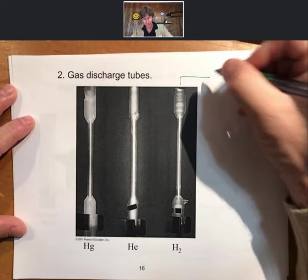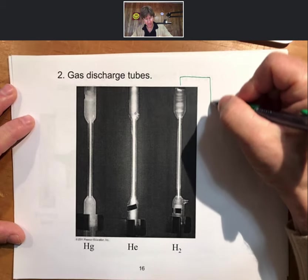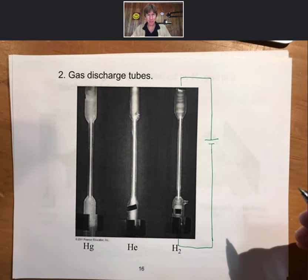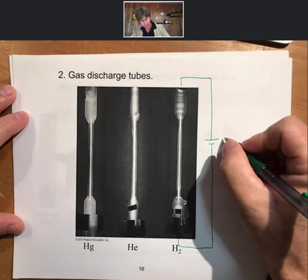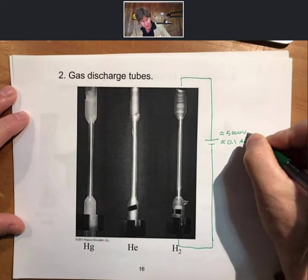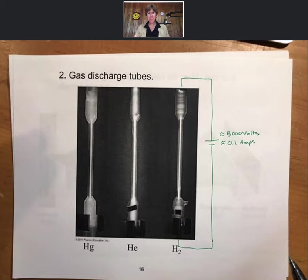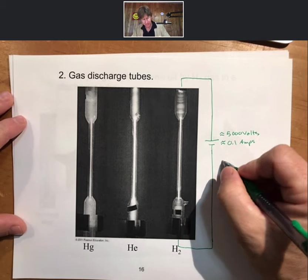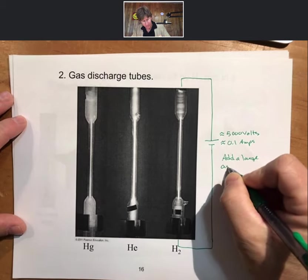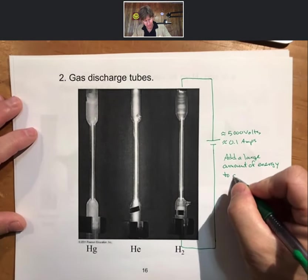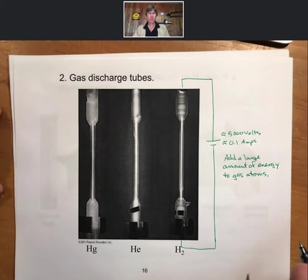Let me sketch this process. This gas discharge tube is in a setup showing some sort of power supply — it does plug in. When you do this, you're applying approximately 5,000 volts and approximately 0.1 amps. Basically, you are adding a large amount of energy to the atoms — in this case, hydrogen atoms — which makes the atoms emit light.